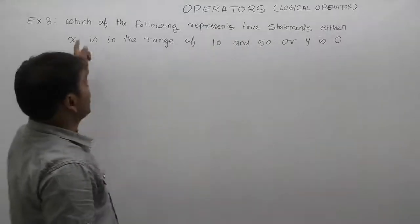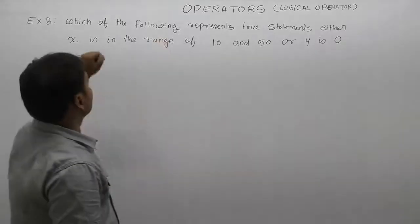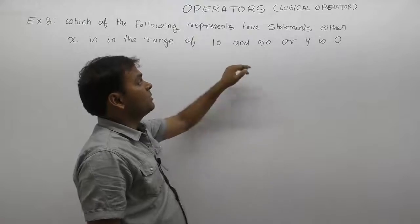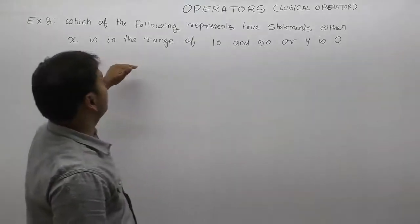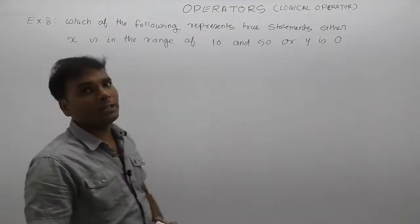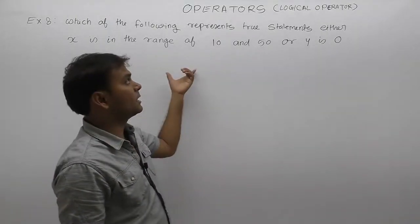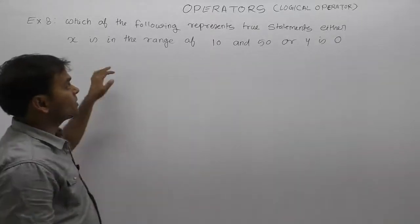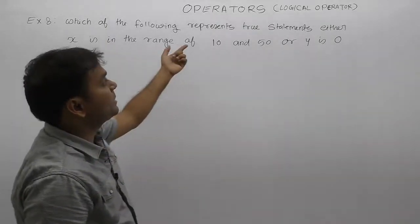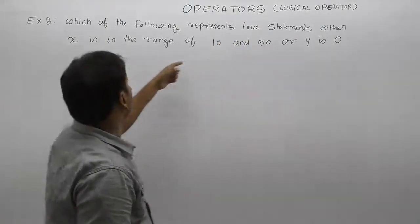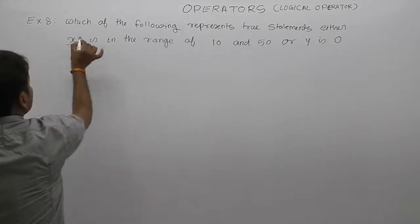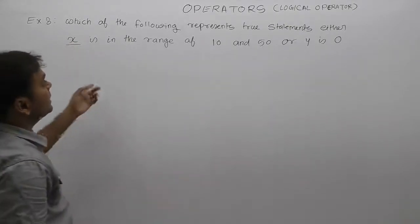Next one. In this case, read this example properly. Which of the following represents a true statement? In this example, some options are there. Therefore, we are not writing or providing those options. We're directly solving this example. According to the question, options are available according to conditions. Which of the following represents a true statement? Read this properly. X means some variable x is in the range of